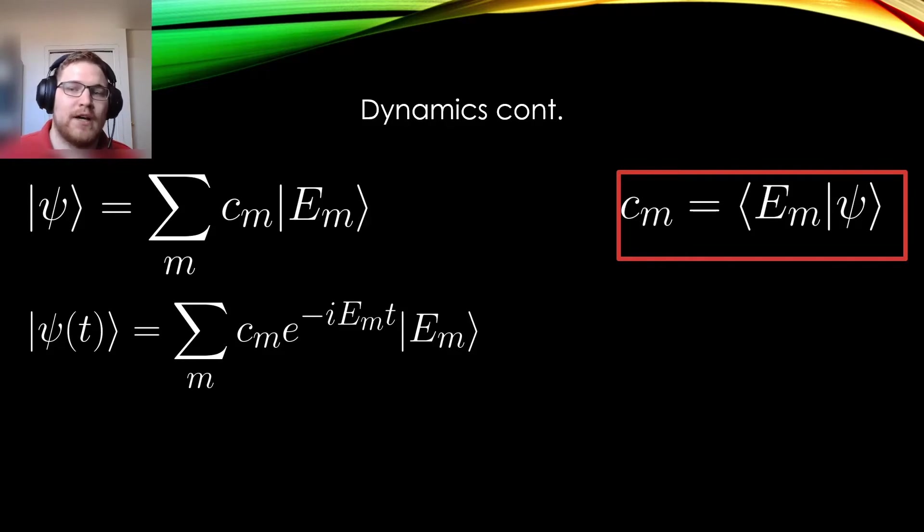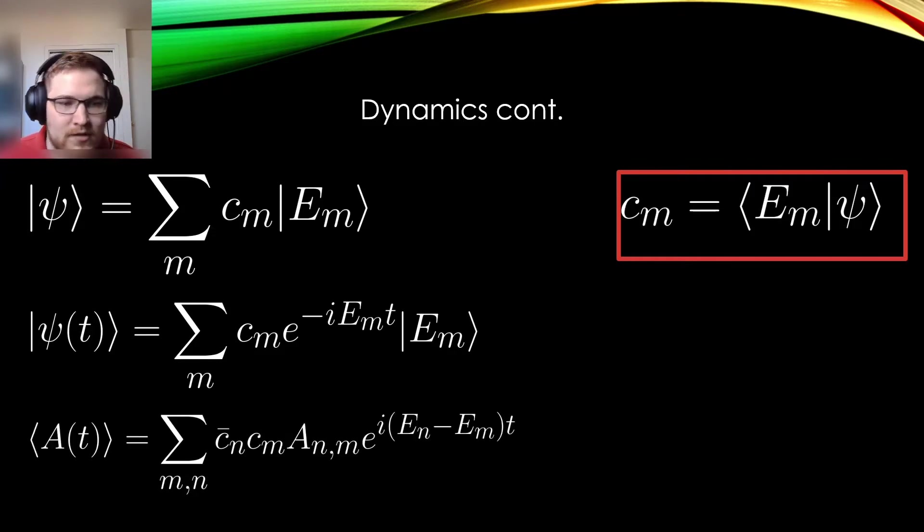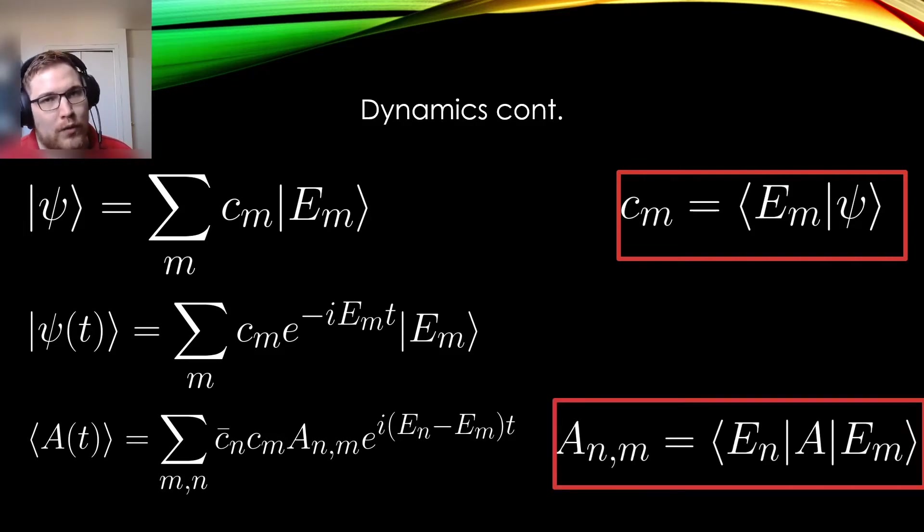We can then time-evolve the state by simply time-evolving the energy eigenkets. Tracking the expectation value of an observable in this way is quite easy. Simply applying the state vector in time to both sides of the matrix gives the following equation, where we have labeled the matrix entries of A by the energy eigenbasis in the following way.